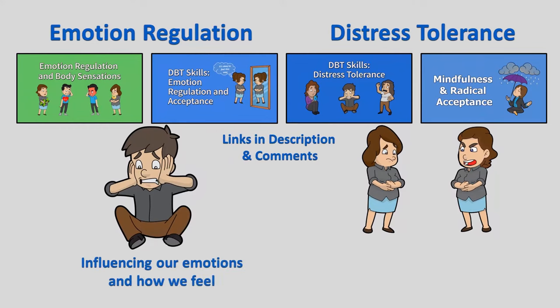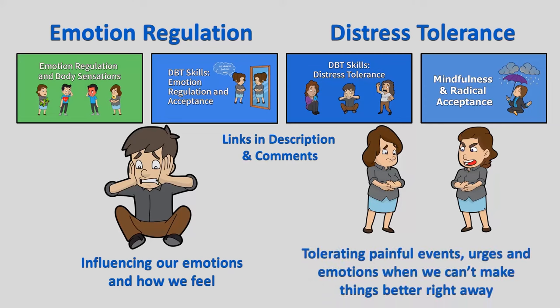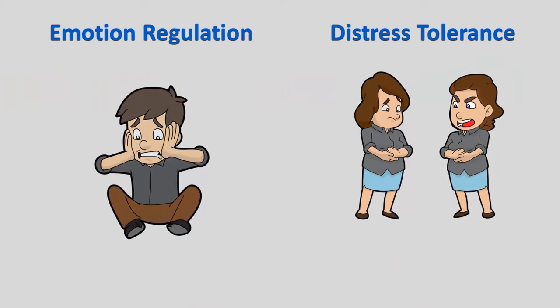Emotion regulation refers to our ability to influence our emotions and how we feel. Distress tolerance involves learning to tolerate painful events, urges and emotions when we can't make things better right away. Both emotion regulation and distress tolerance teach us how to respond to and manage our emotions.